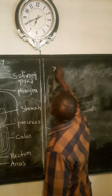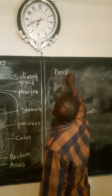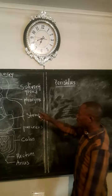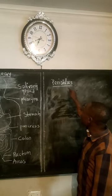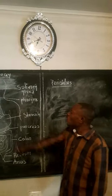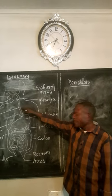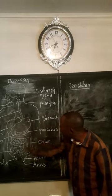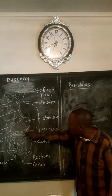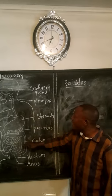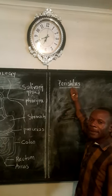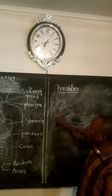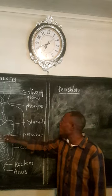We are saying peristalsis — that is the process which takes place. Note that this process of peristalsis does not only take place in the oesophagus; there are other places throughout the alimentary canal — in the stomach, intestines, and large intestine — where we experience the same, because this is facilitated by alternate contraction and relaxation of muscles.